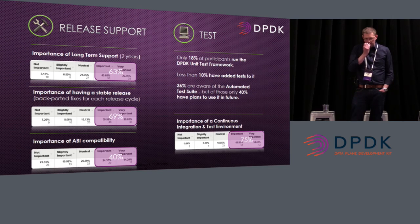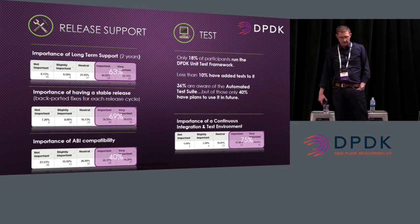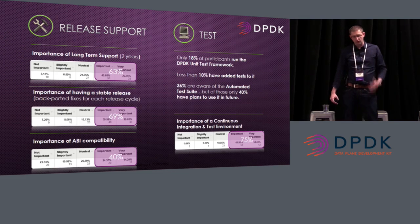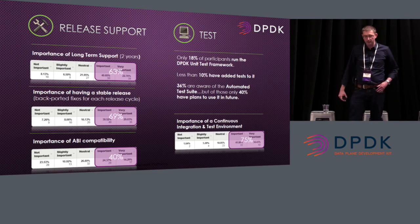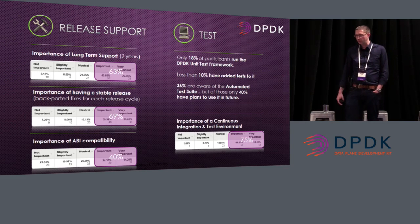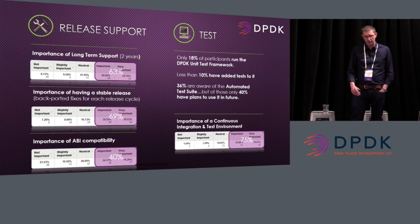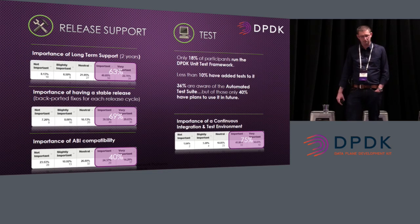Release support was identified as important, so we asked three questions. One was to rate the importance of long-term support — using two years as an example. Grouping 'important' and 'very important,' over 60% believe it was important or very important. We also asked about the importance of a stable release with backported fixes for each release cycle — that percentage was a little higher, and as John mentioned, we're going to start with that in 16.07. The last was ABI compatibility, which got a lower percentage of responses in terms of importance.